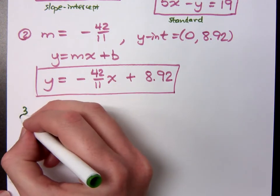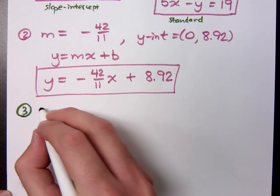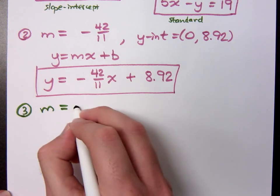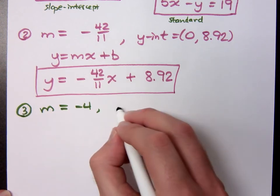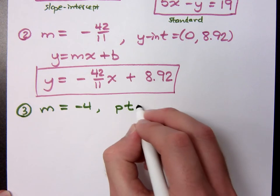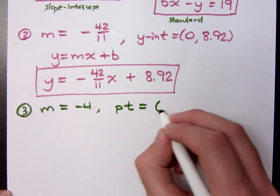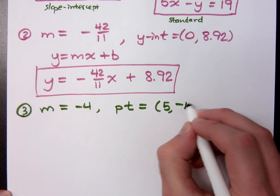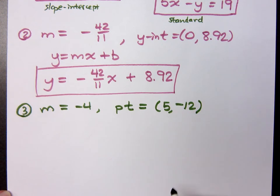All right, let's try this one. If I say that the slope is negative 4, and just a point that we go through is 5, negative 12.